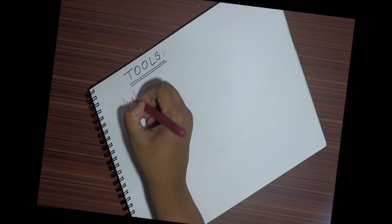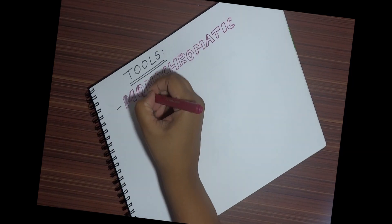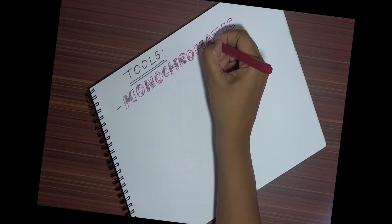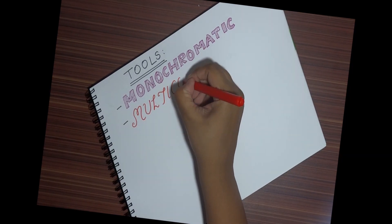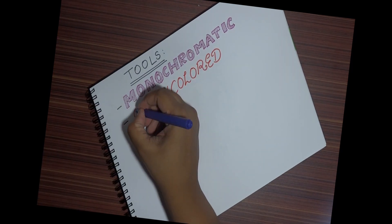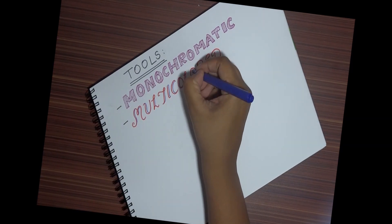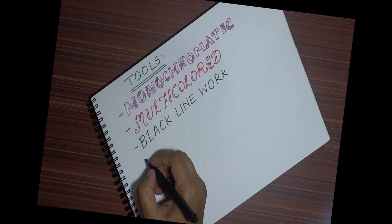Tools for creating a mandala: a mandala can be monochromatic, which means a single color can be used to draw, sketch, and shade the entire mandala, or it can be multicolored wherein you can use more than two colors and make it as colorful as possible, or entirely black line work.